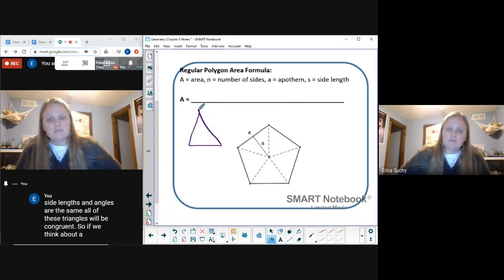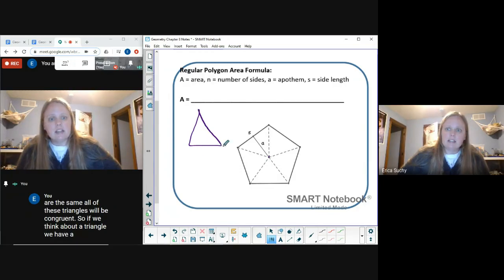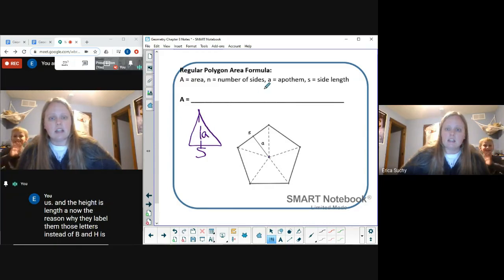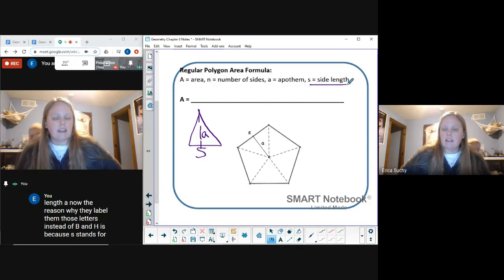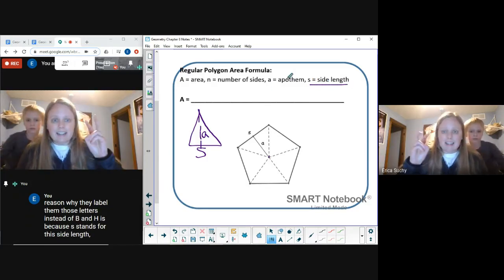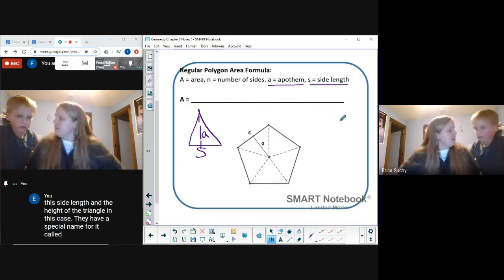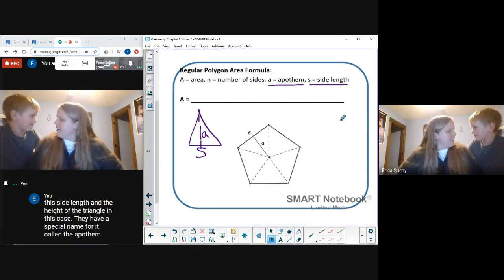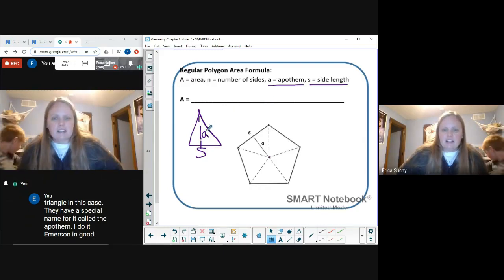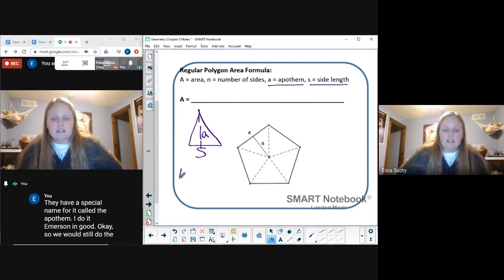So if we think about a triangle, we have a base and a height. On this one, the base is length s and the height is length a. Now the reason they label them those letters instead of b and h is because s stands for the side length, and the height of the triangle in this case has a special name called the apothem.